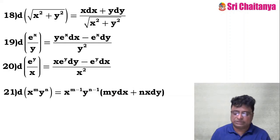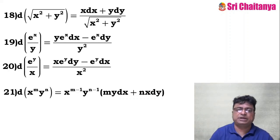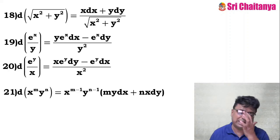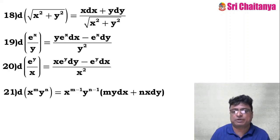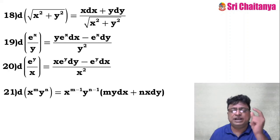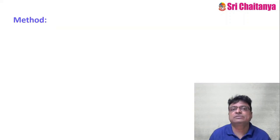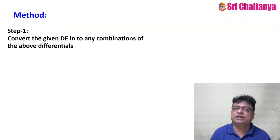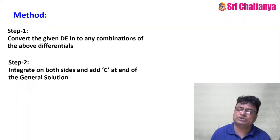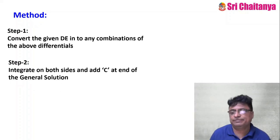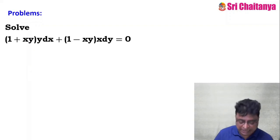If you are thorough with these 21 formulas, by permutations and combinations you can develop many varieties of problems. Once you identify the structure and match it to the corresponding differential, the method is very simple: convert the differential equation into combinations of the above differentials, integrate on both sides, and add C at the end for the general solution.